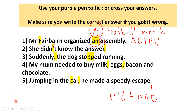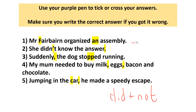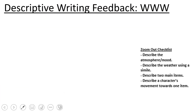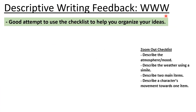I'm just going to rub some of these notes off so that you can pause the video now and make any corrections that you need to. Come back when that's done. Okay, so today we are looking at descriptive writing feedback. Firstly, we're going to look at what went well. One of the things that we did well was using the checklists to help us organise our ideas - for example, using a zoom out checklist to ensure that we do all four steps.